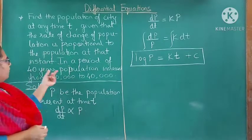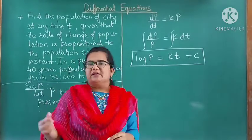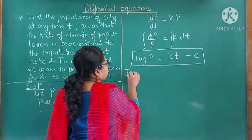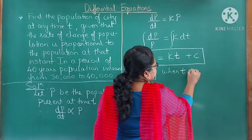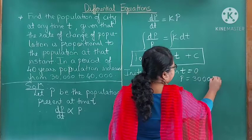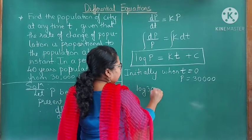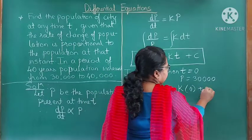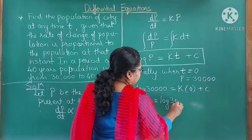According to the given condition, in 40 years the population increased from 30,000 to 40,000. That means initially the population was 30,000. So, when t = 0, P = 30,000. Therefore, this expression gives log(30,000) = k·0 + C, so C = log(30,000).